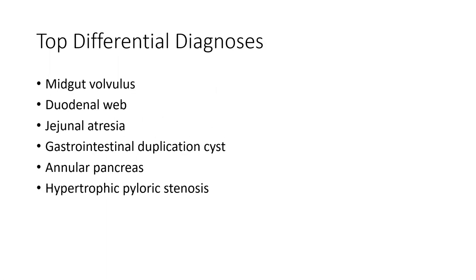The differential diagnosis includes midgut volvulus, annular pancreas, duodenal web, intestinal malrotation, and hypertrophic pyloric stenosis.